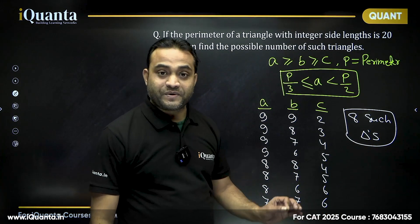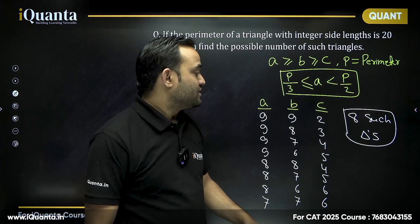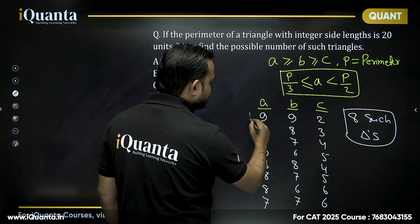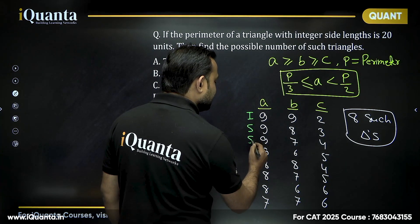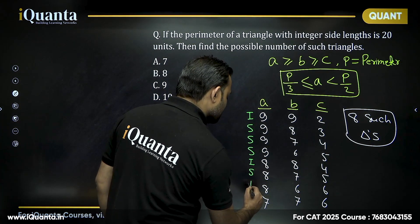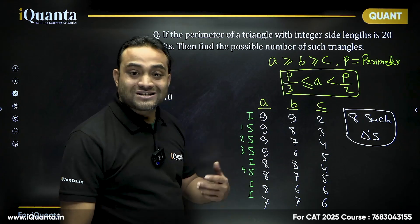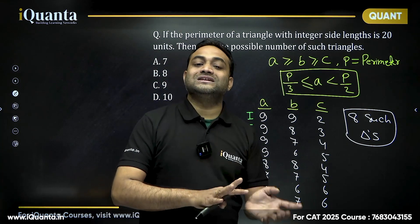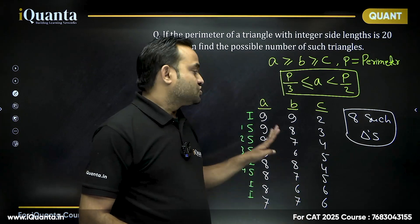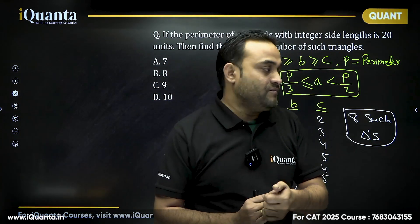Among these 8 triangles, we can classify them: (9,9,2), (8,8,4), (8,6,6), and (7,7,6) are isosceles — that is 4 isosceles triangles. The remaining 4 are scalene. An equilateral triangle is not possible because the perimeter 20 is not a multiple of 3.